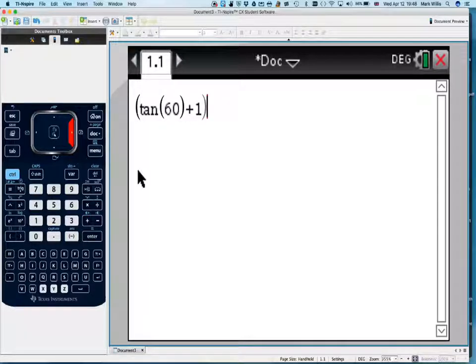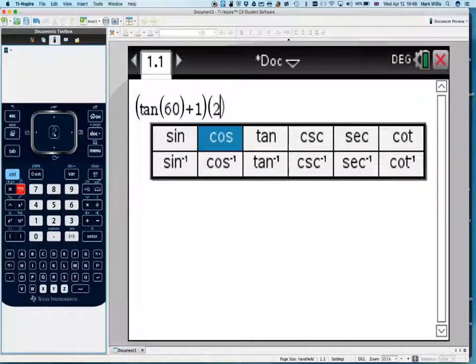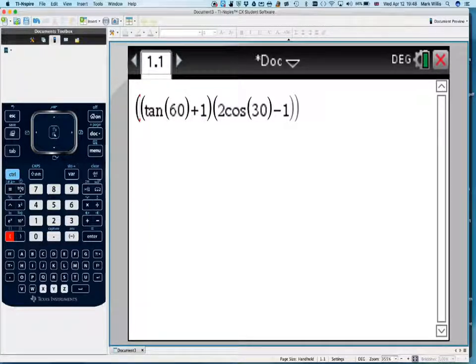Let's pull across another set of brackets of 2 trig cos 30, going along minus 1.